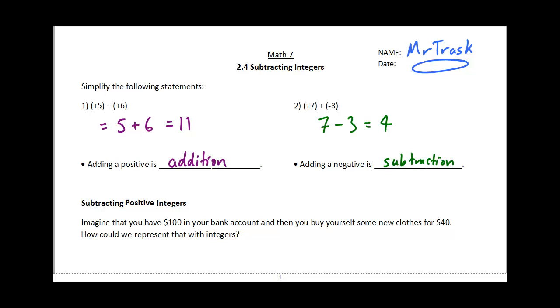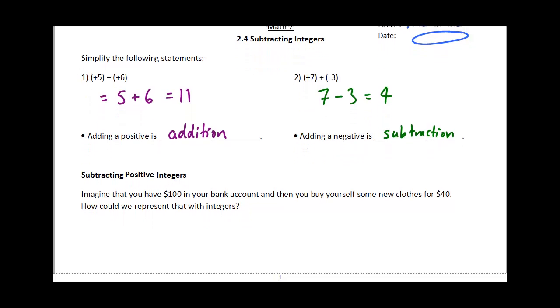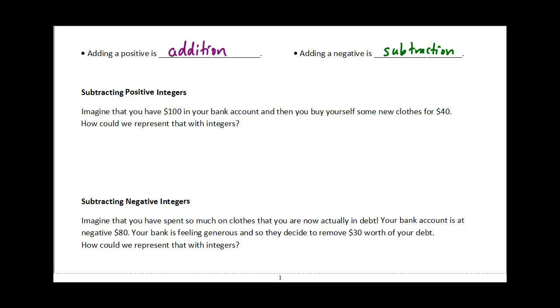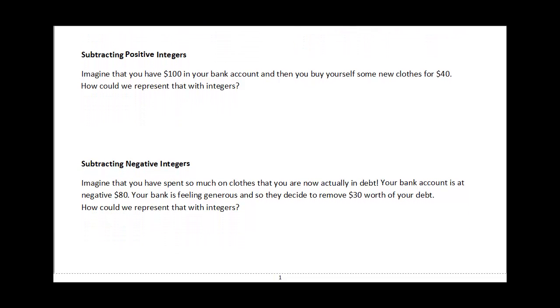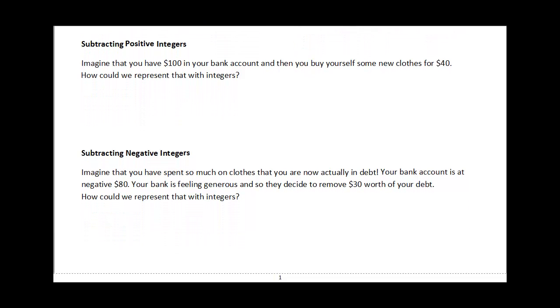So we have our rules for addition. What happens when we subtract integers? We've got two situations: we're either going to subtract a positive number or we're going to subtract a negative. We'll use these two examples.